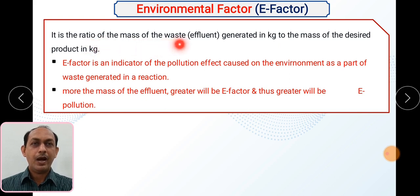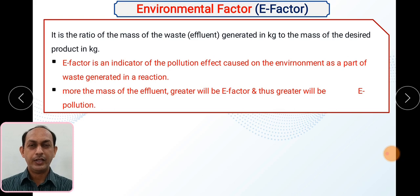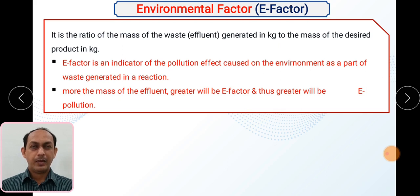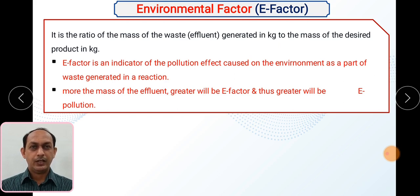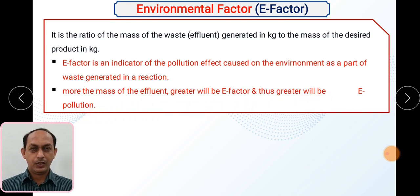The environmental factor is the basic ratio of mass of waste — also called effluent — generated in kg, to the mass of the desired product. It is directly related with the right-hand side of the reaction: the desired product and the waste or byproduct formed. So it is a ratio of byproduct (waste) to product. This factor is an indicator of the pollution effect caused on the environment as a part of waste generated in the reaction.